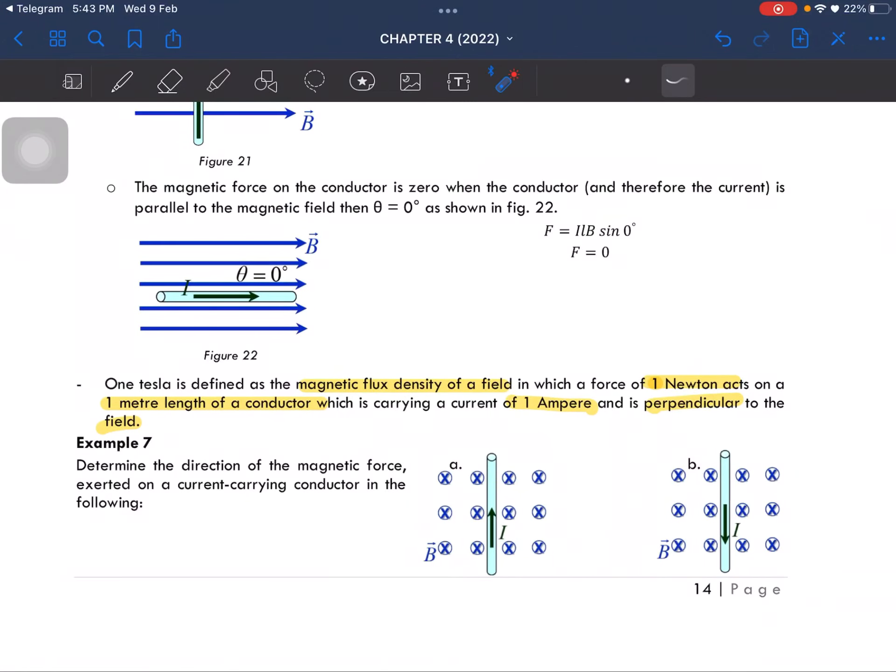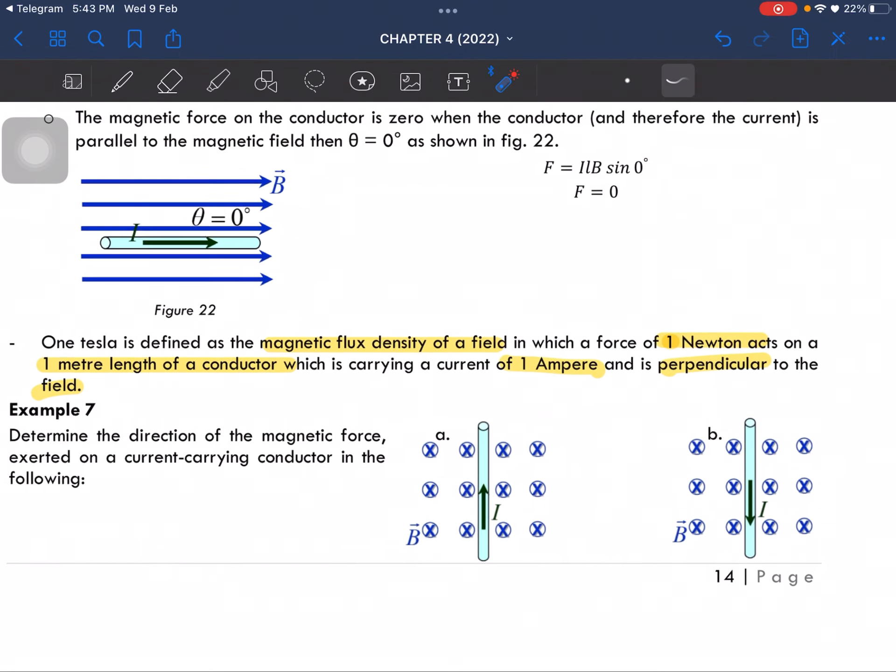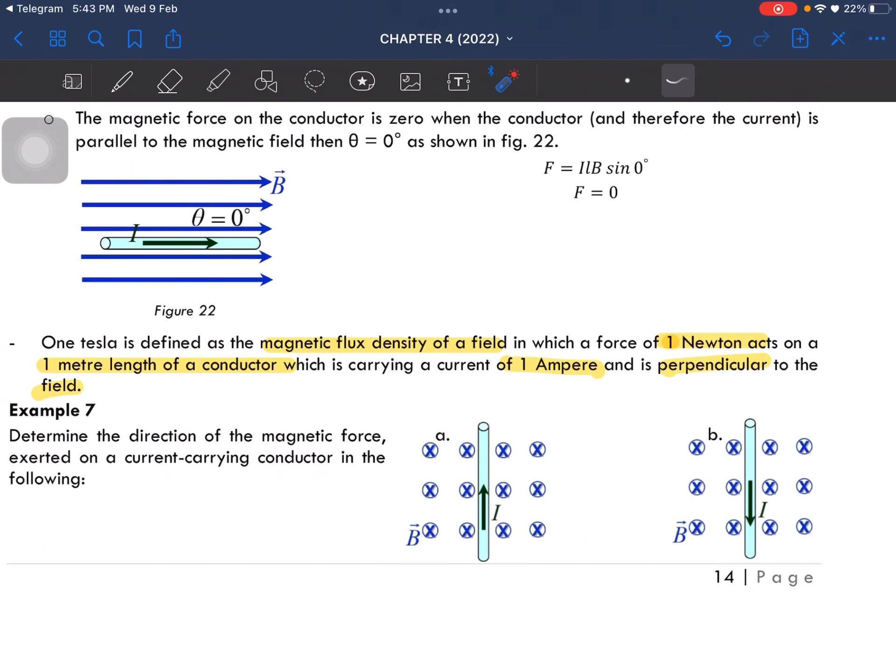Example 7. Determine the direction of the magnetic force exerted on this current carrying conductor. So for this one, we are going to use Fleming's left hand rule.